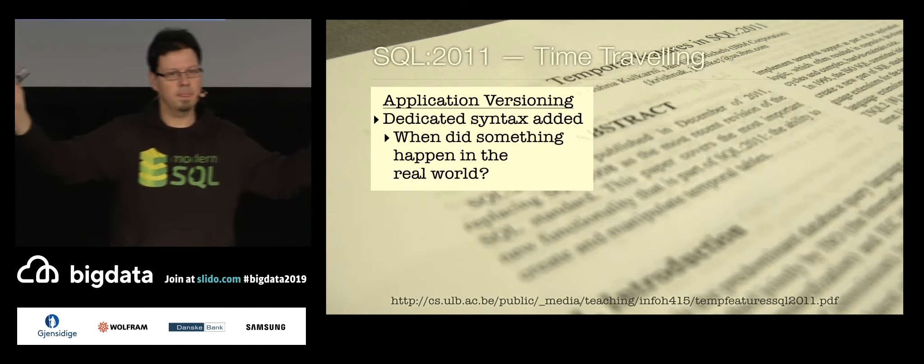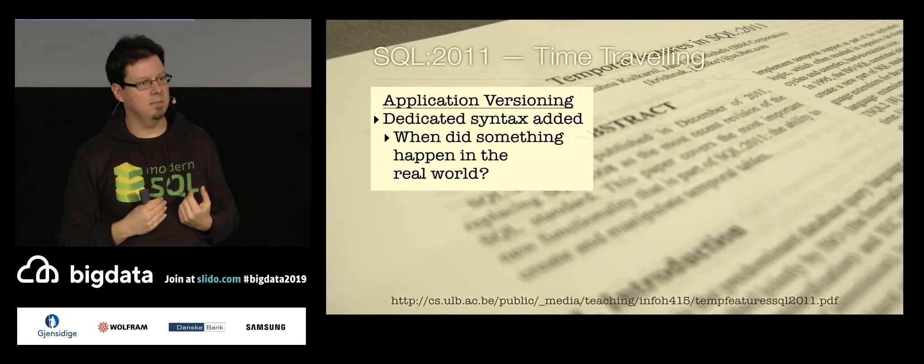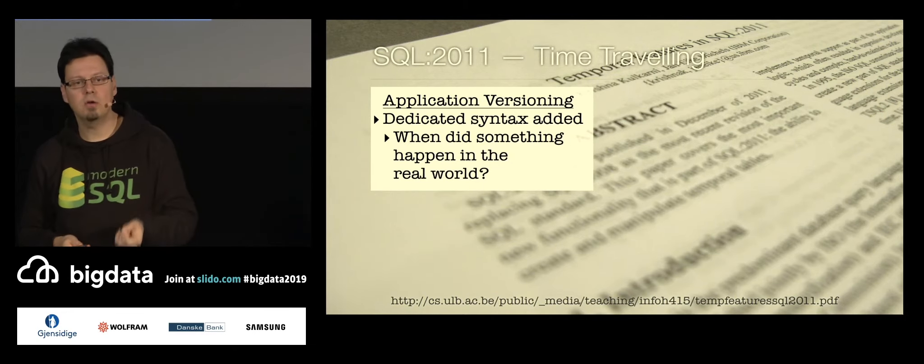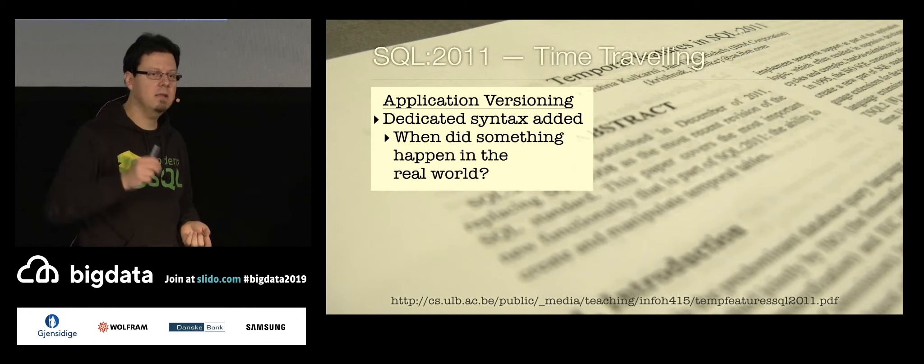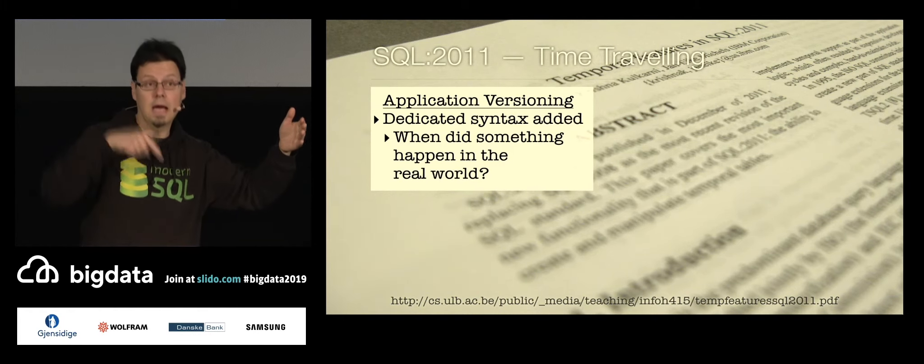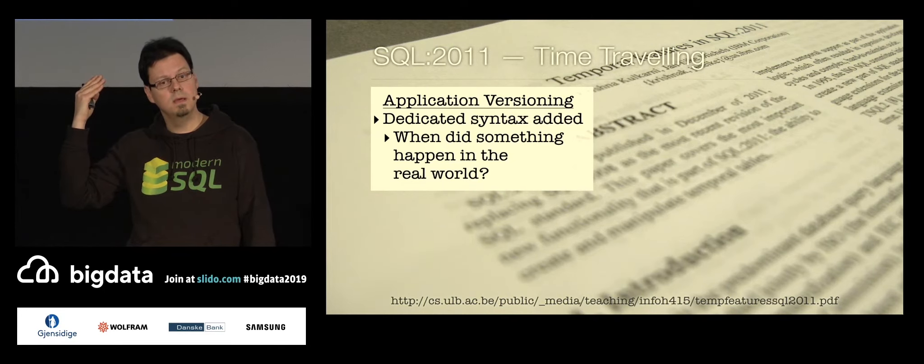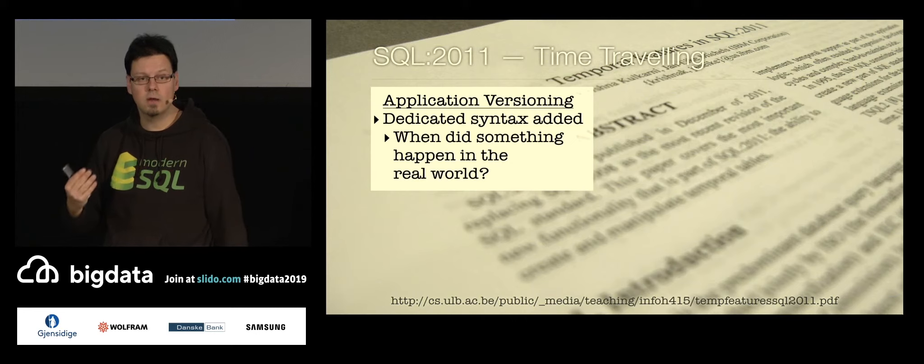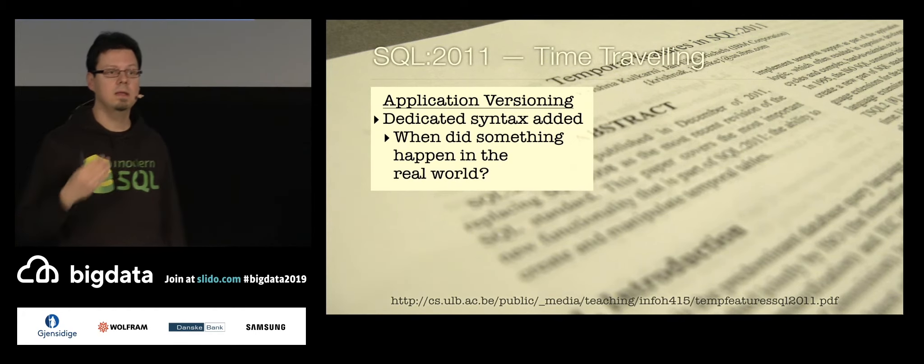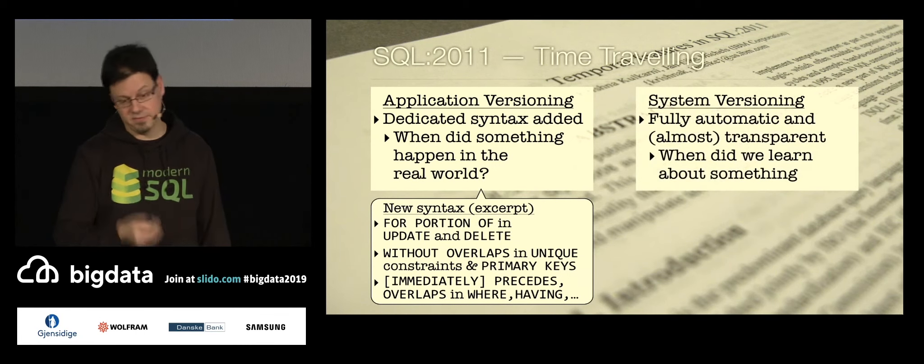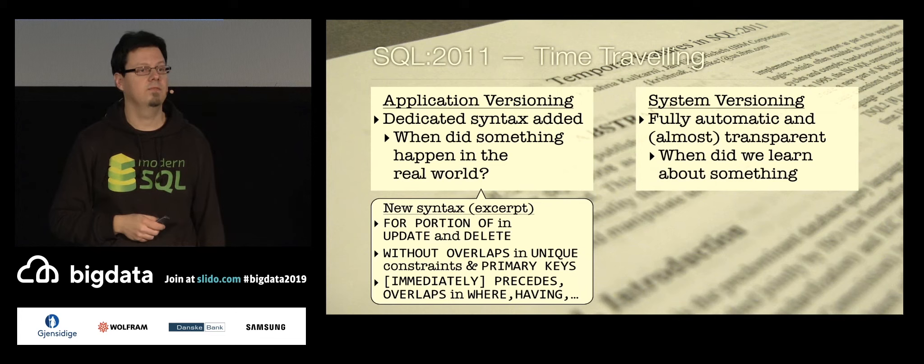But they still want to add into the system, like, that name has changed, but not now, but also already three weeks ago. So this is what application versioning is there to model, how the real world changed independently of how we learned about these changes. There's quite a new syntax. I won't show it because of time. And then there's the other kind of versioning, the system versioning. I will demo that a little bit. The system versioning is not model how the real world changed, but it's modeling how we learned about these changes.